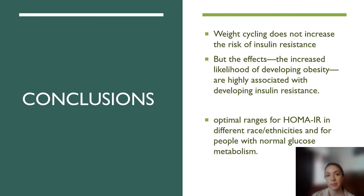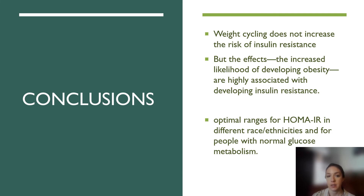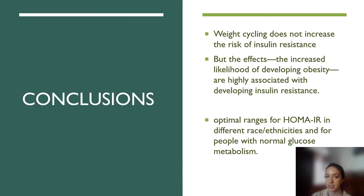To conclude, my research showed that it was not weight cycling itself that increased the risk of insulin resistance, but rather the effects of weight cycling — specifically the increased likelihood of developing obesity — which was highly associated with developing insulin resistance. A key finding was that Asian Americans and Mexican Americans were at an increased risk of insulin resistance after adjusting for weight cycling history, BMI, sex, and age. Future research needs to aim at deciphering optimal ranges for HOMA-IR in different race ethnicities and for people with normal glucose metabolism.